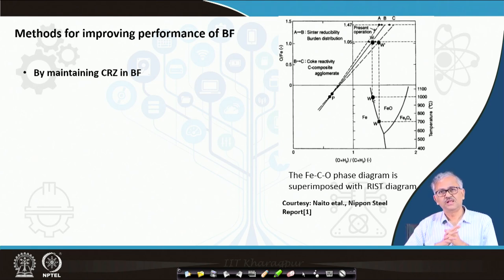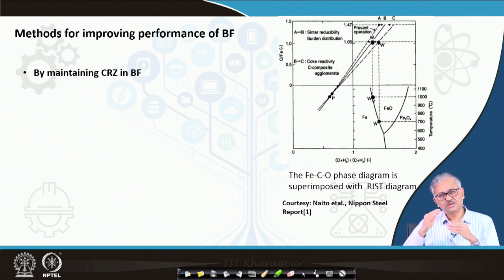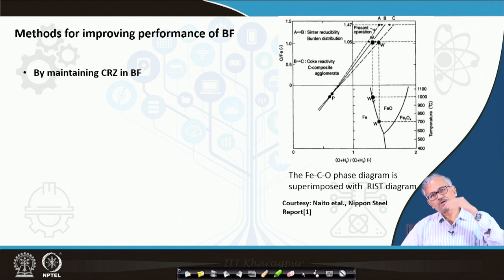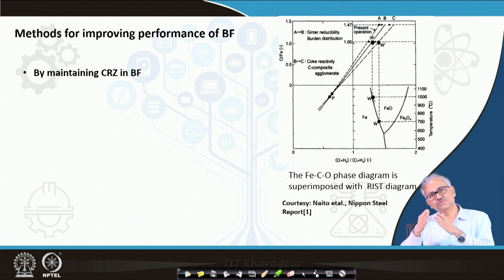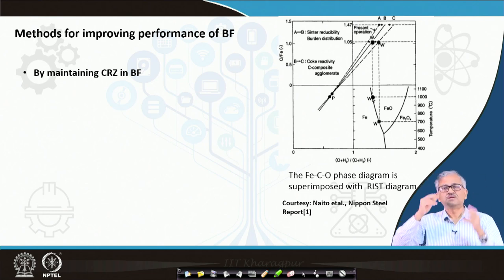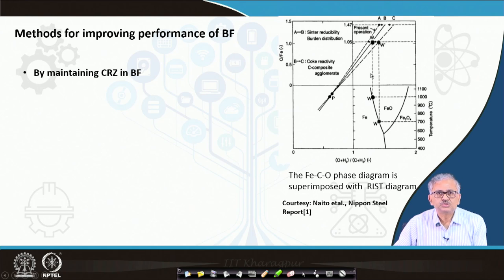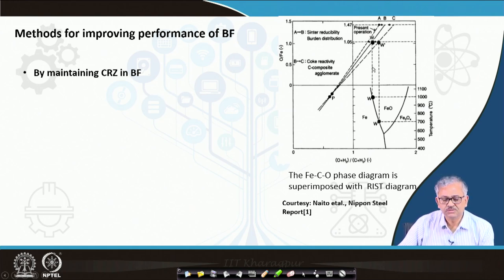Even under the most optimized condition, if the CO in the upper part of the isothermal zone is greater than what is required for the wüstite–iron equilibrium, CO utilization will be further lower. In the diagram, at the wüstite composition — that is the 1.06 O/Fe ratio — you can find that the actual O/C in the blast furnace is much lower than the equilibrium O/C.